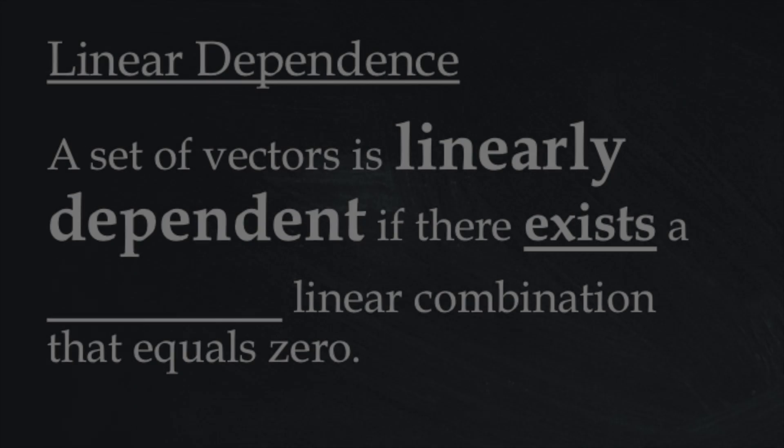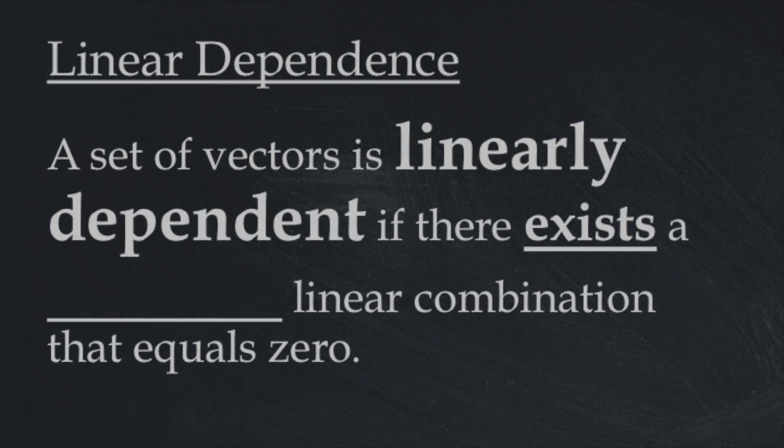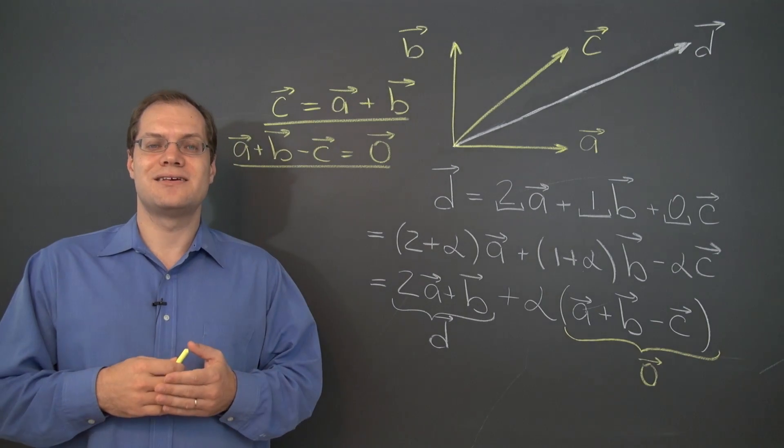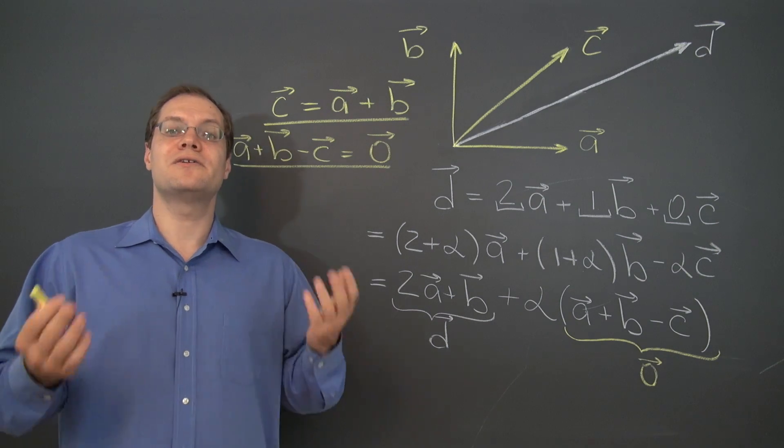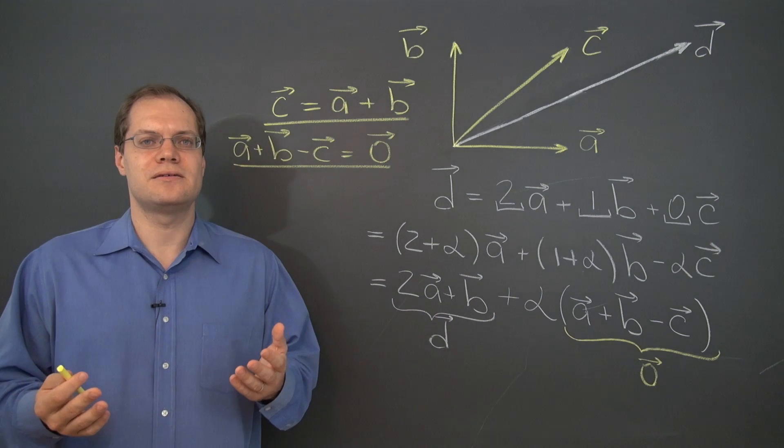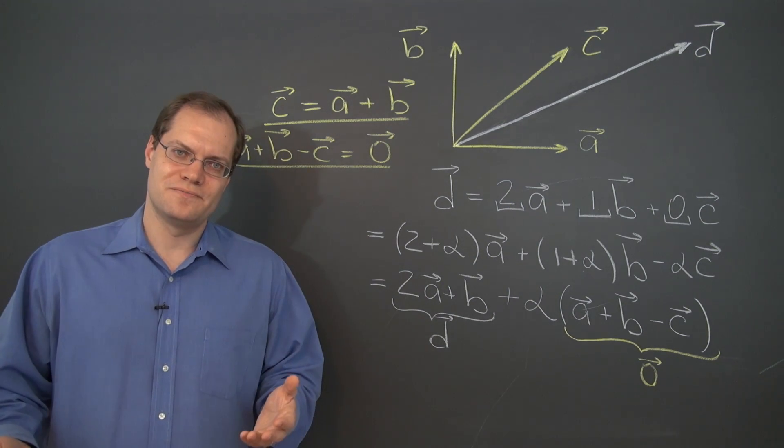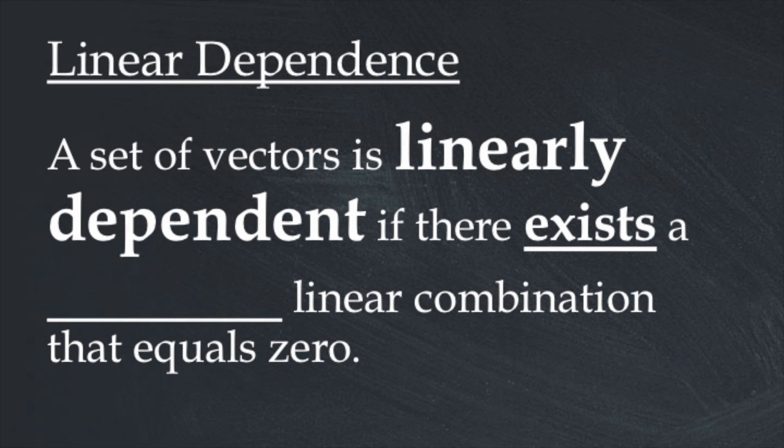A set of vectors is linearly dependent if there exists a linear combination that equals the 0 vector. Now, exists is a slightly fancy mathematical word that simply means there is. So a set of vectors is linearly dependent if there is a linear combination that equals 0.